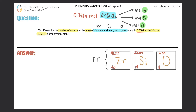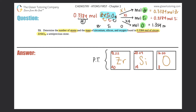You just have to look at how many of each atom are in the compound. For zirconium, there's only one, so you multiply by one — it's essentially the same number: 0.3384 moles of zirconium. For silicon, there's also one, so it's exactly the same: 0.3384 moles of silicon. For oxygen there are four, so we multiply: 0.3384 times four equals 1.354 moles of oxygen (keeping four sig figs).